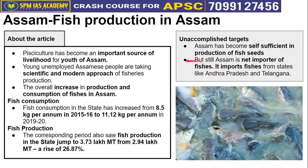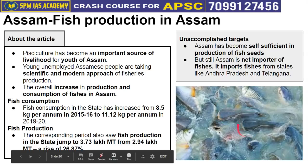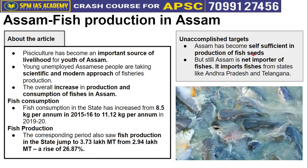However, some targets remain unaccomplished. Overall, Assam has become self-sufficient in fish seed production — all domestic requirements for fish seeds are met internally. But as far as overall fish production is concerned, Assam is still a net importer, importing fish from states like Andhra Pradesh and Telangana. Our production is not meeting our demand. In the future, given that Assam has the potential, we should increase fish production so that instead of remaining an importer state, Assam becomes an exporter state.